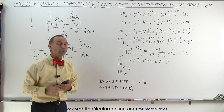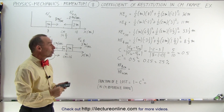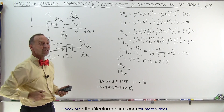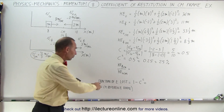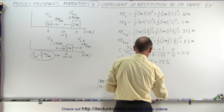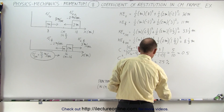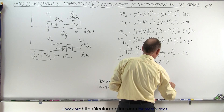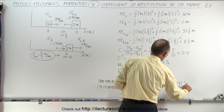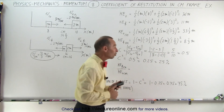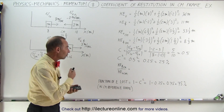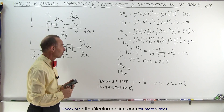That means that relative to the center of mass, 25% of the energy is retained and 75% of the energy is lost. The fraction of energy lost, 1 minus C squared, equals 1 minus 0.25, which is 0.75, or 75%. So the coefficient of restitution squared gives us the fraction of energy retained, and 1 minus C squared gives the fraction lost.